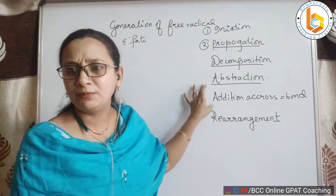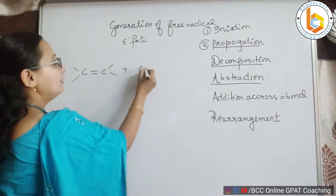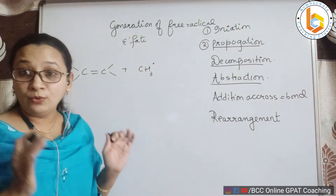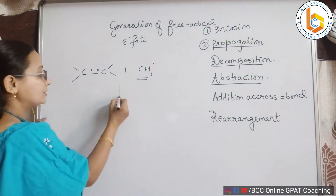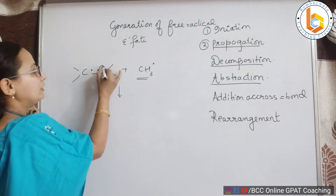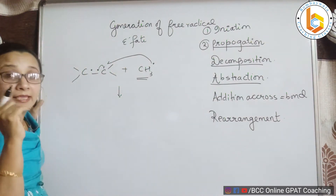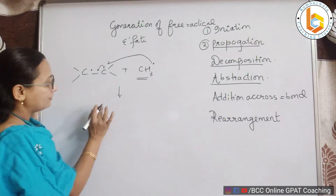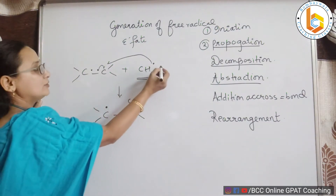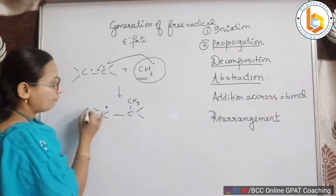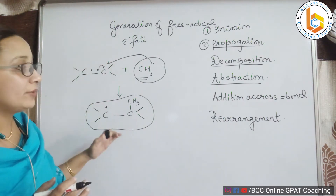First, let's talk about addition across a double bond — very simple and easy. For example, you have a methyl free radical present in the reactant. I am showing two electrons using half arrows to represent one-electron movement. This electron will come on this carbon and the methyl will also come on this carbon. This carbon is becoming a free radical. So a free radical was there in the reaction, and now another free radical is formed in the product. Free radical producing another free radical is always referred to as propagation.